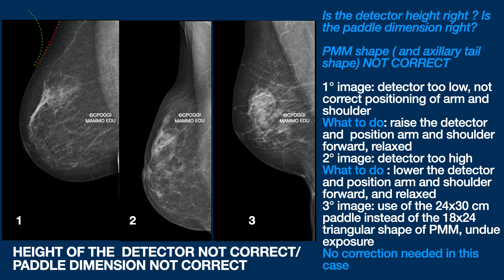We will see in the next lesson the correct positioning of arm and shoulder. In image two, the detector is too high — this is how it should have been — which means arm and shoulder are far too back.